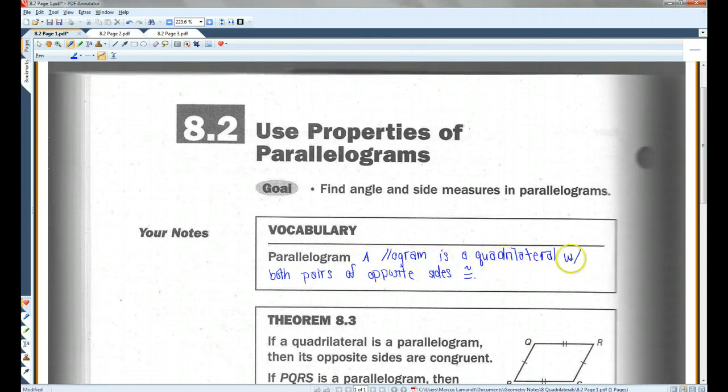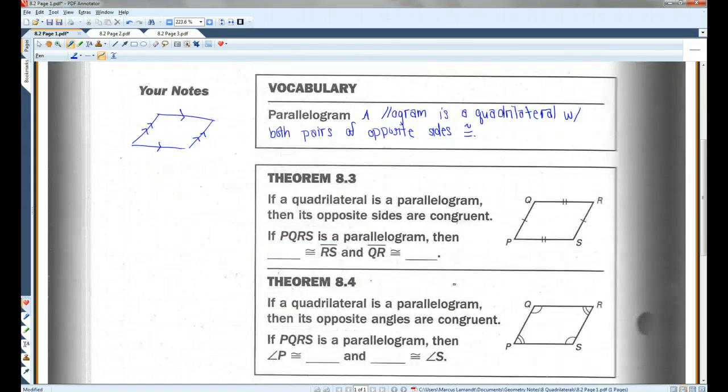A parallelogram is a quadrilateral with both pairs of opposite sides congruent. It looks something kind of like this, if you can imagine if these sides were actually parallel. It doesn't have to be slanted, it could be a rectangle, but basically the opposite sides are parallel to each other. By the way, this little thing here with the parallel sign and then the o-gram, this is my abbreviated version of parallelogram.